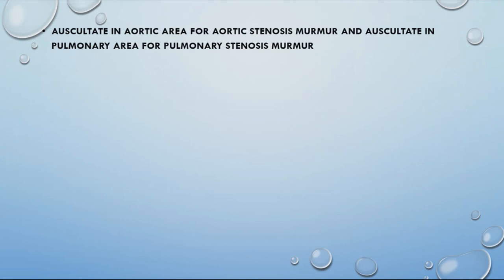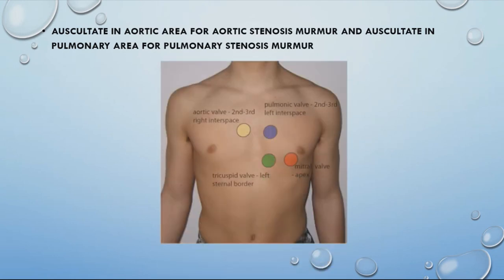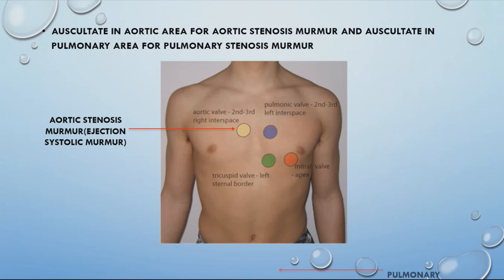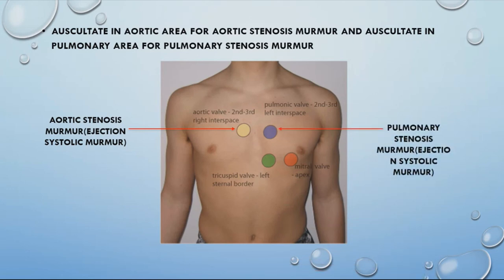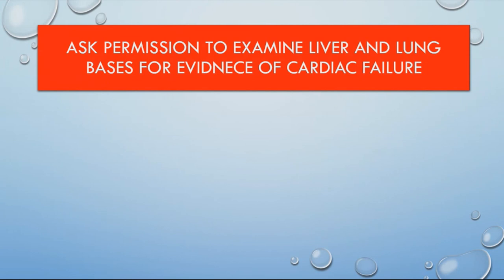Auscultate in the aortic area for aortic stenosis murmur and in the pulmonary area for pulmonary stenosis murmur. The murmur heard in the aortic area is an ejection systolic murmur, and the same type of murmur — ejection systolic — is heard in the pulmonary area. These murmurs can sometimes radiate to the carotid area.